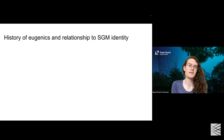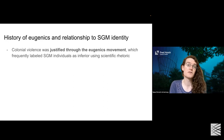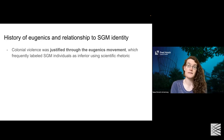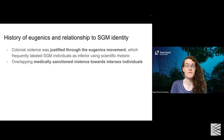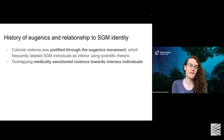Why is it so challenging to be in academia and hold sexual and gender minority identities? There's a strong historical connection between eugenics and sexual and gender minority identity. Colonial violence was justified through the eugenics movement, which labeled sexual and gender minority individuals as inferior using scientific rhetoric. This overlapped with medically sanctioned violence towards intersex individuals that continues through today, and with many other parts of the eugenics movement targeting individuals with many forms of marginalized identities throughout the last few thousand years.